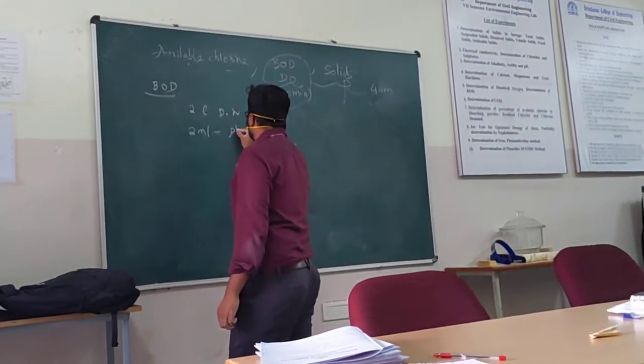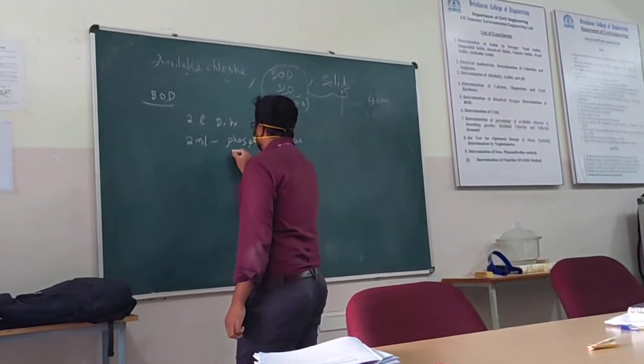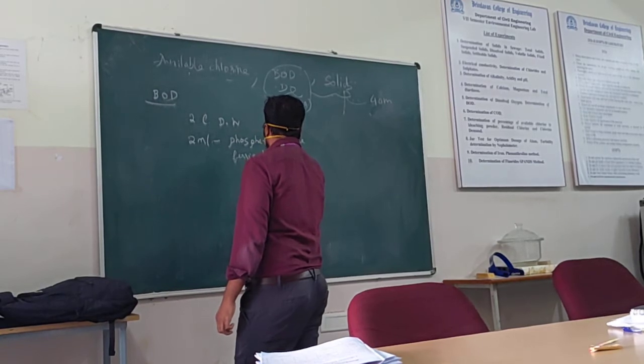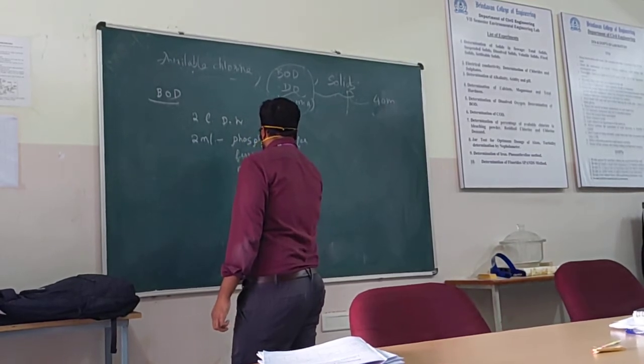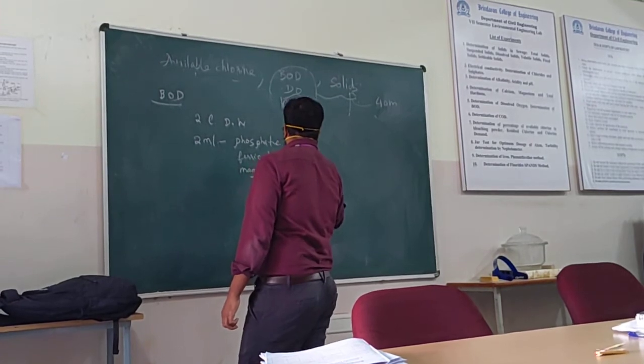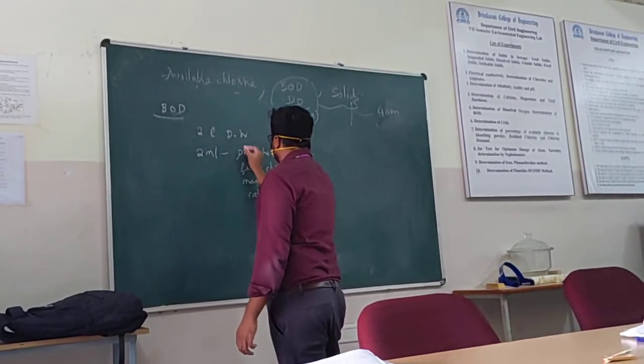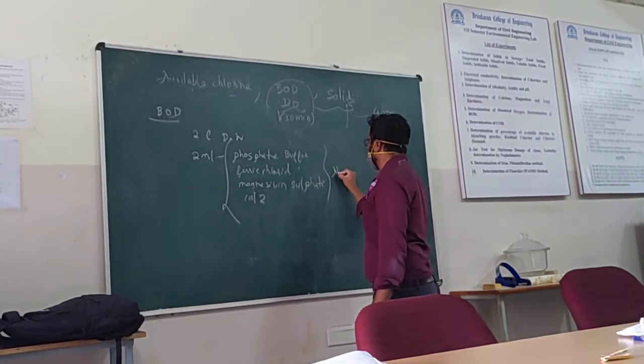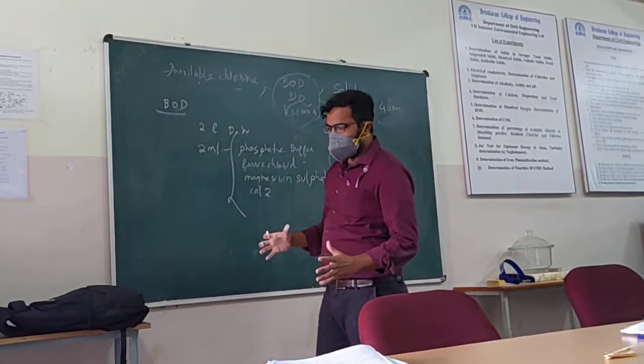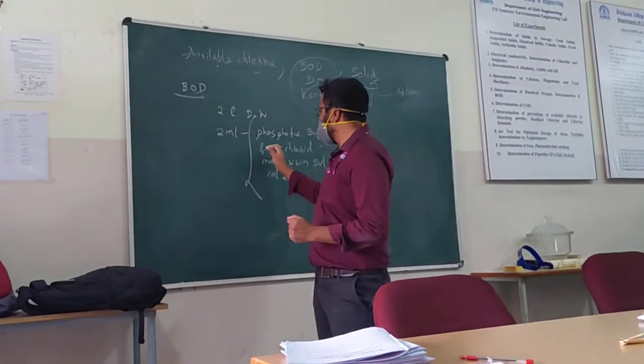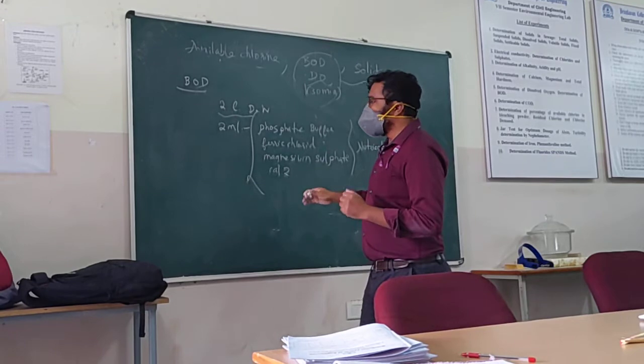Those are phosphate buffer, ferric chloride, magnesium sulfate, and calcium chloride. These four are nutrients. So I am just preparing this sample to test the BOD. I am going to take 2 ml of all these things and dissolve into 2 liters to prepare the solution.